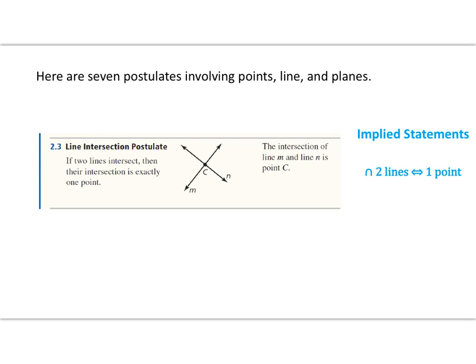All right, so let's consider this postulate. How could I illustrate an if-then statement for if two lines intersect, then their intersection is exactly one point? It looks something like this. You just replace the words with a picture and labels.